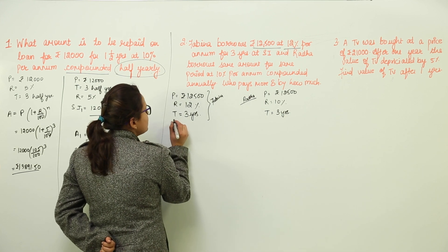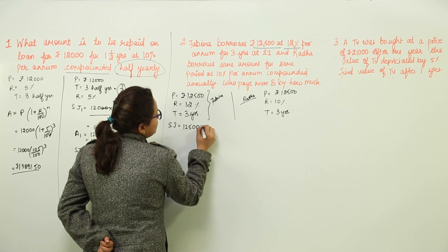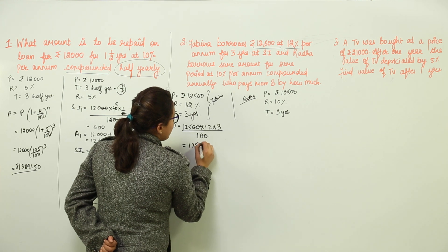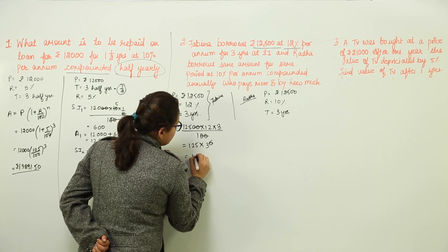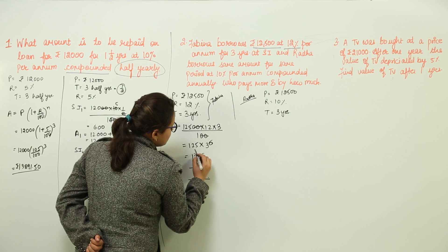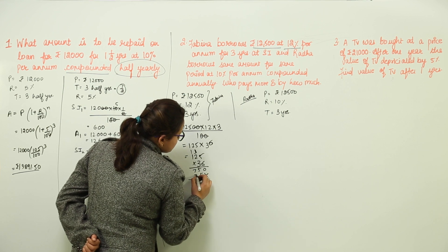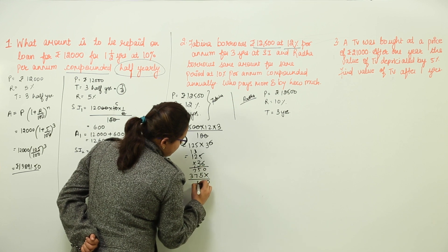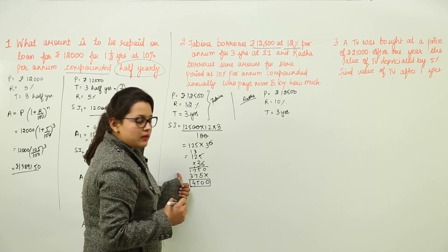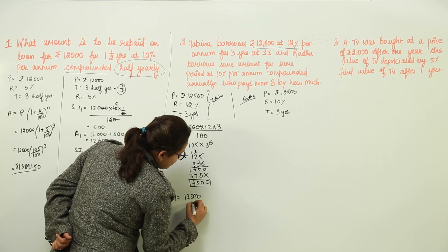Let us calculate Fabina's simple interest first. Simple interest = 12,500 × 12 × 3 / 100 = 125 × 36 = Rs. 4,500. The total amount Fabina pays = 12,500 + 4,500 = Rs. 17,000.